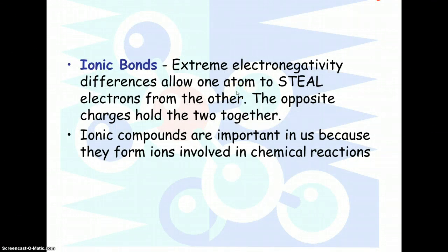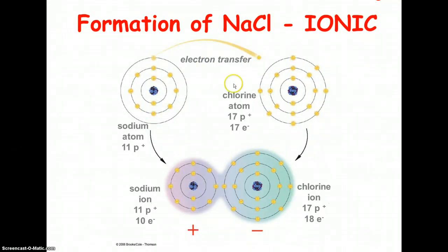Ionic bonding, on the other hand, is where we have this extreme difference in electronegativity. One atom basically has enough electronegativity that it can pull the electrons away from the other atom, and then that sort of holds them together. Ionic compounds are also extremely important in us because they form ions in water, meaning they split into those positive and negative ions, which then are involved in really important chemical reactions that we'll talk about in the body. This is just showing an example of how sodium reacts with chlorine. There's a transfer of an electron, and then we end up with sodium chloride.